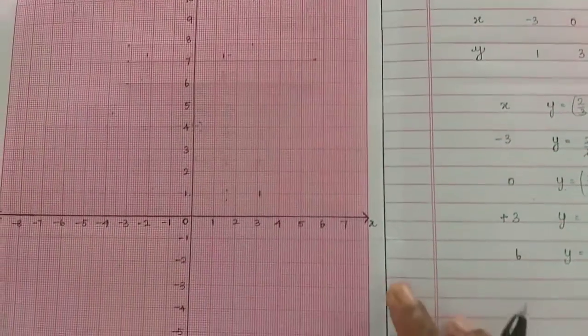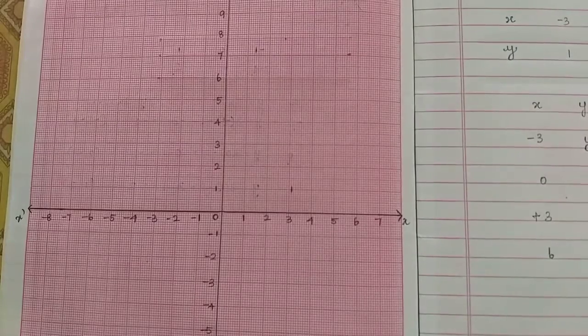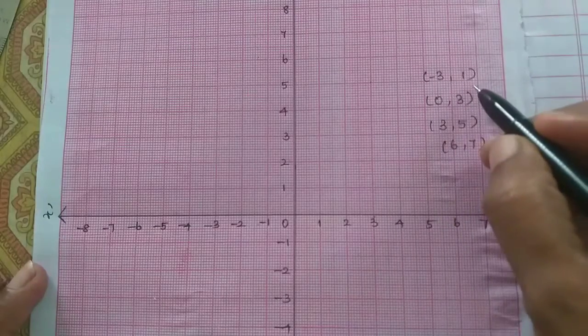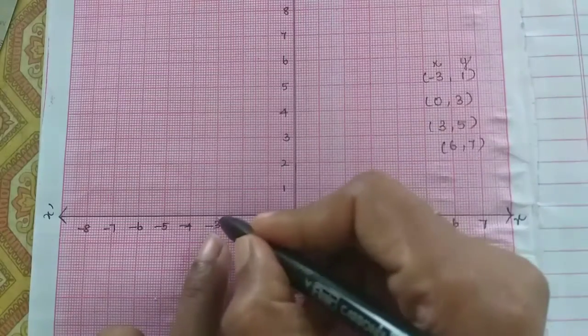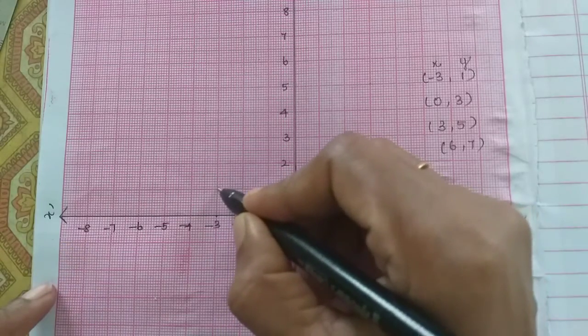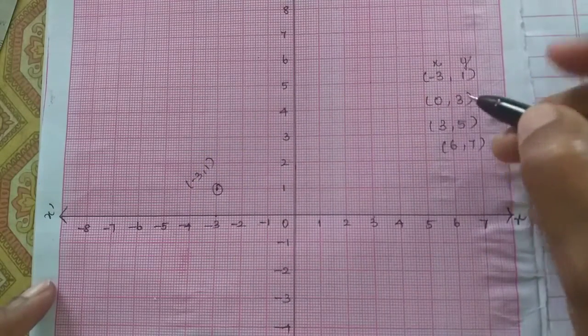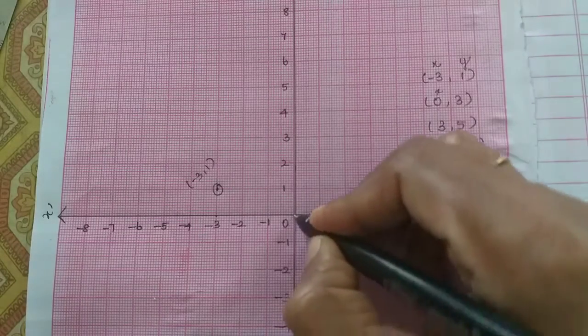Now we have to plot x-axis minus 3 and y-axis 1. X-axis minus 3 here, then 1 plus above. So 1 here, so this is minus 3, 1. There is 0, 3. X-axis 0, y-axis 2 here. Here is 0.